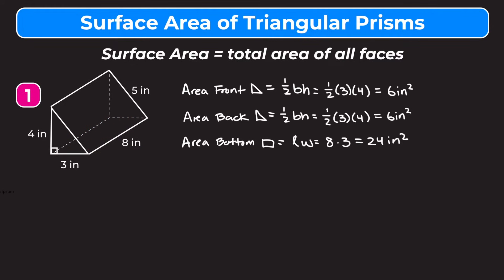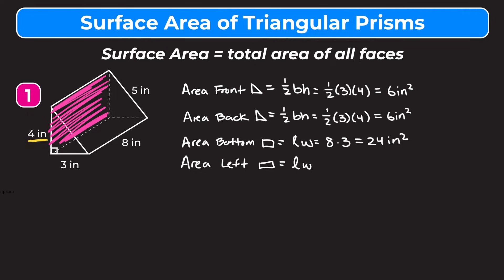Now let's find the area of the left rectangle. We use the same formula: length times width. Our width is four inches and our length is eight inches — it's the same as the corresponding edge on the prism. So the area is eight times four, which is 32 inches squared.